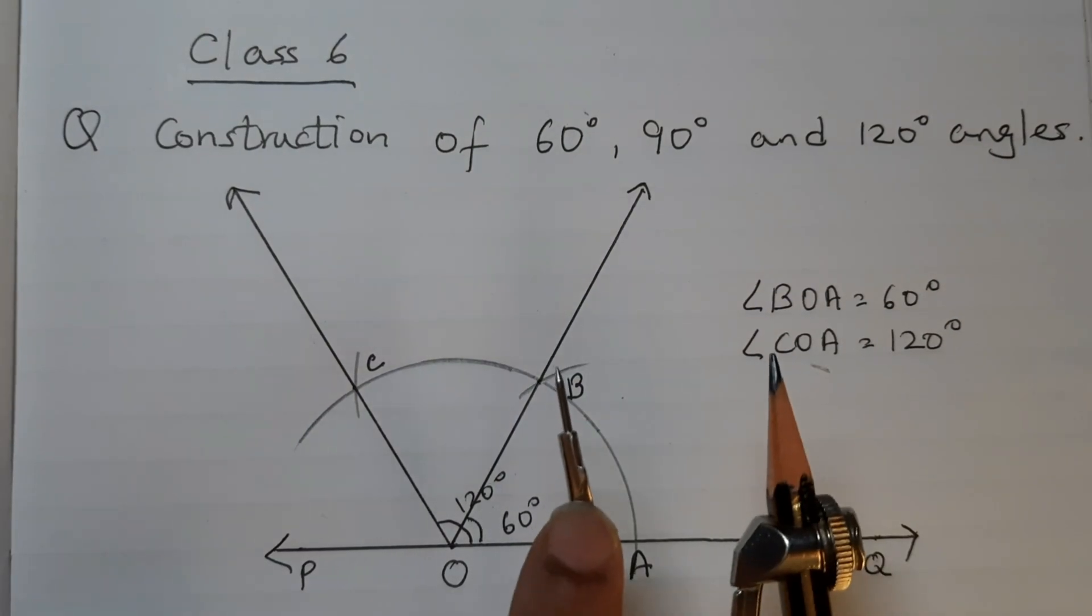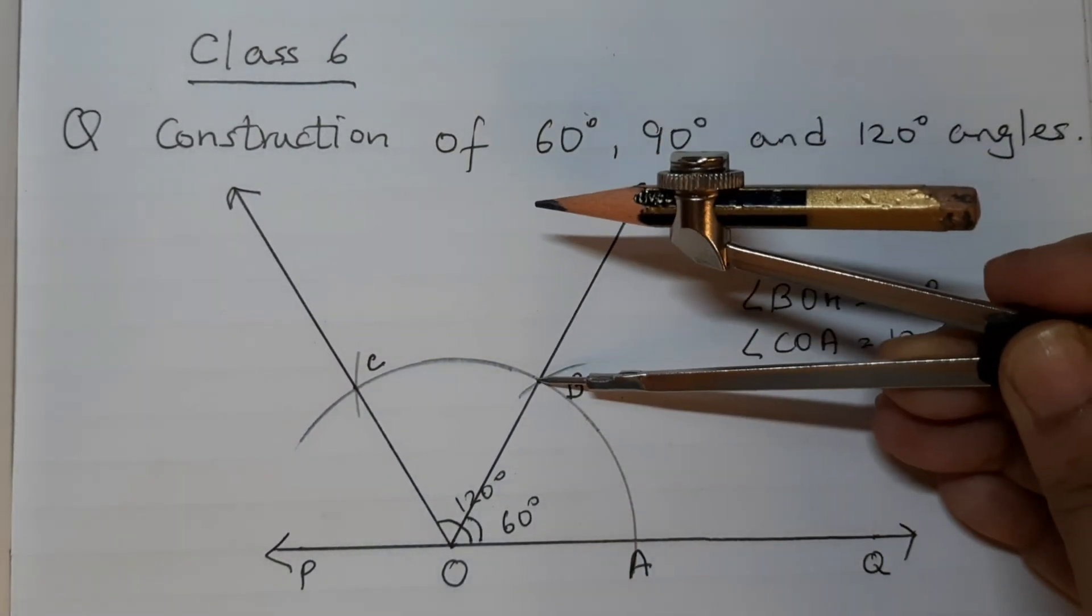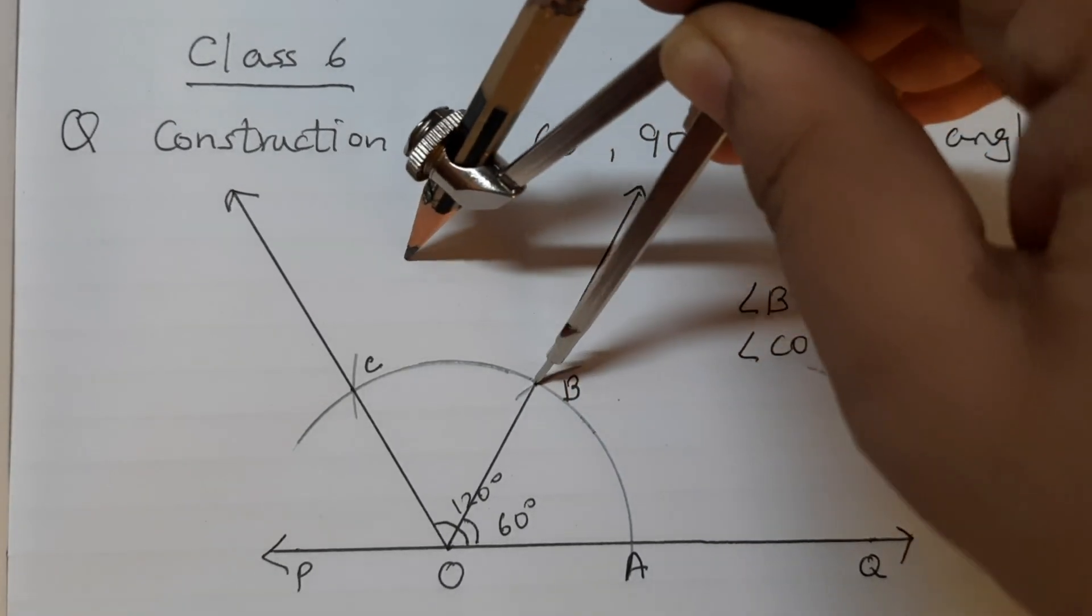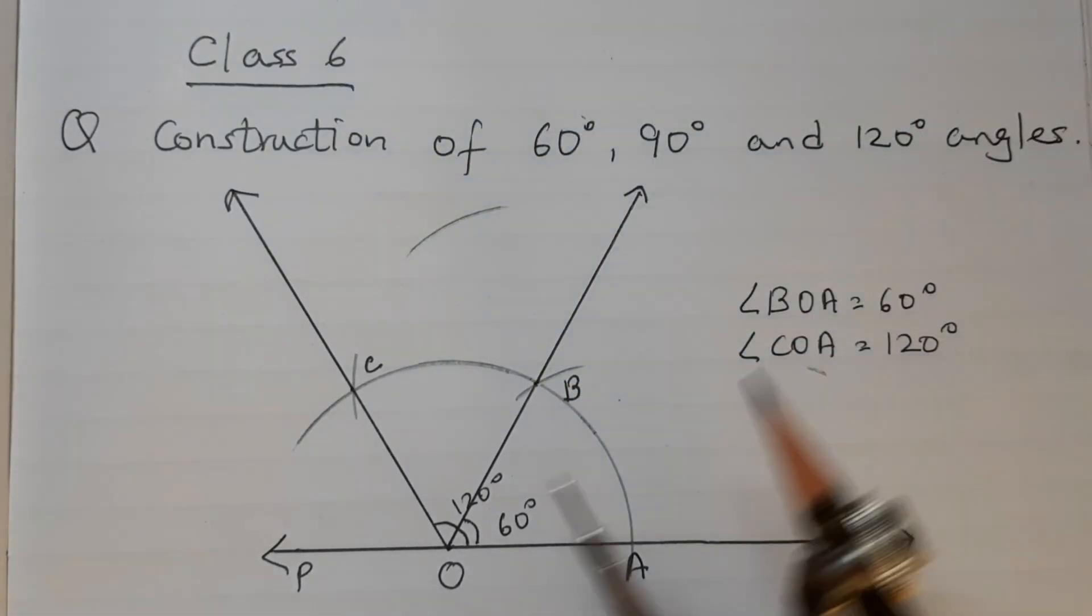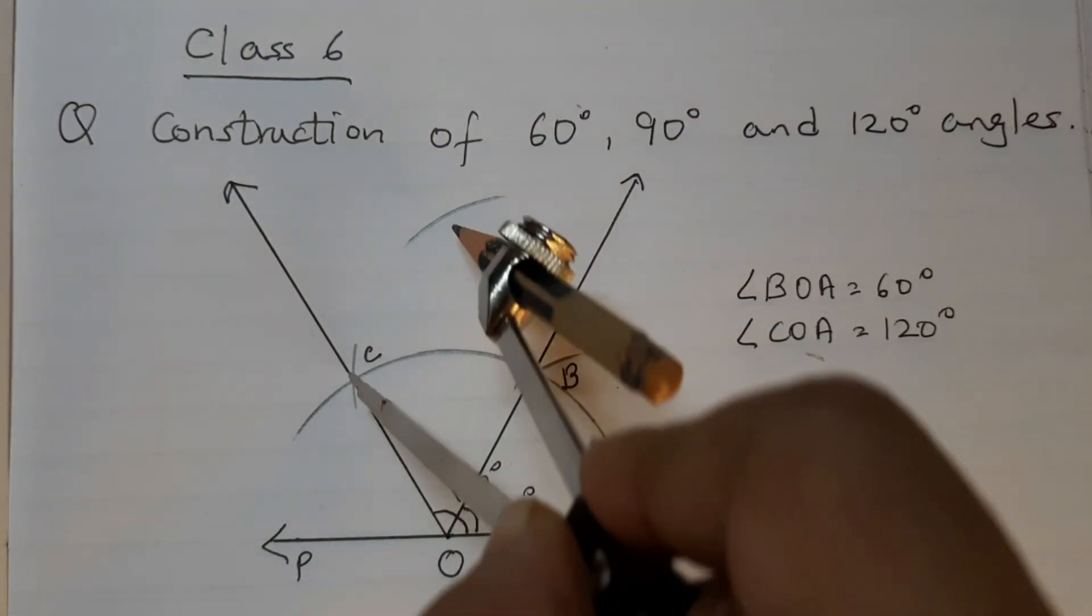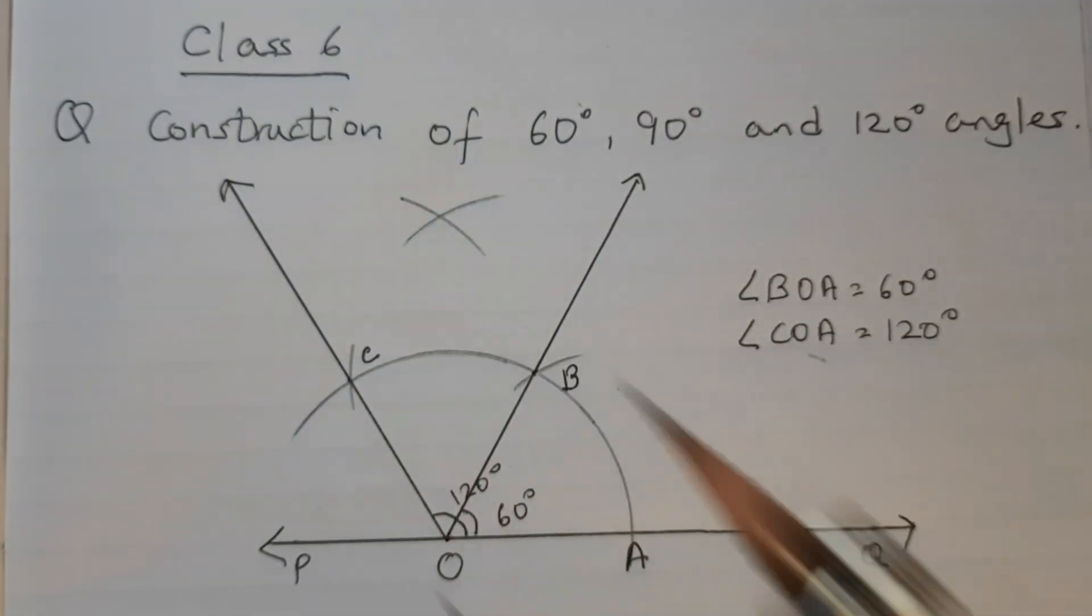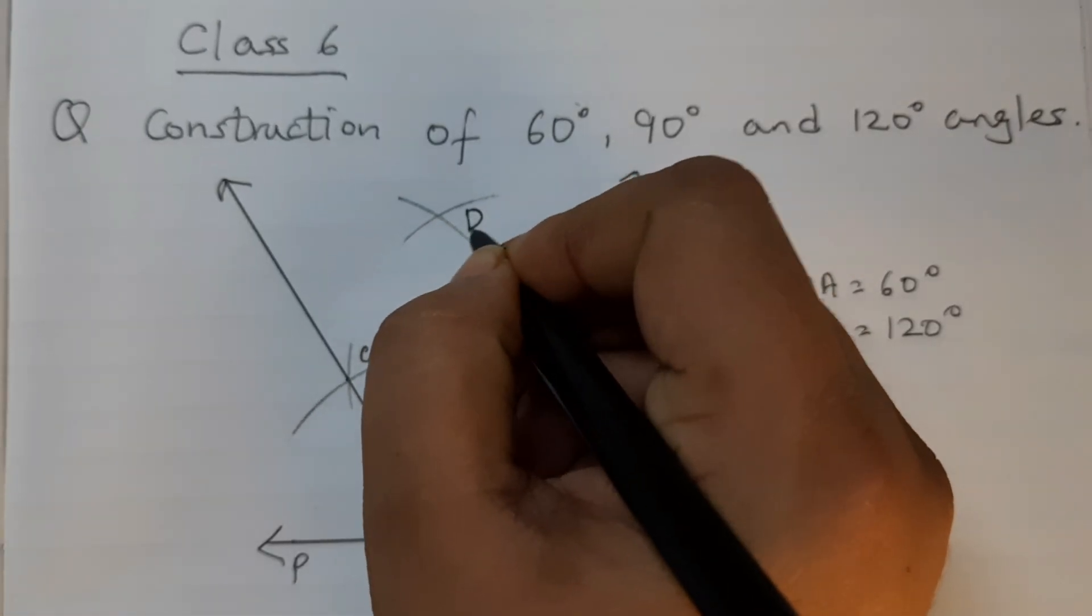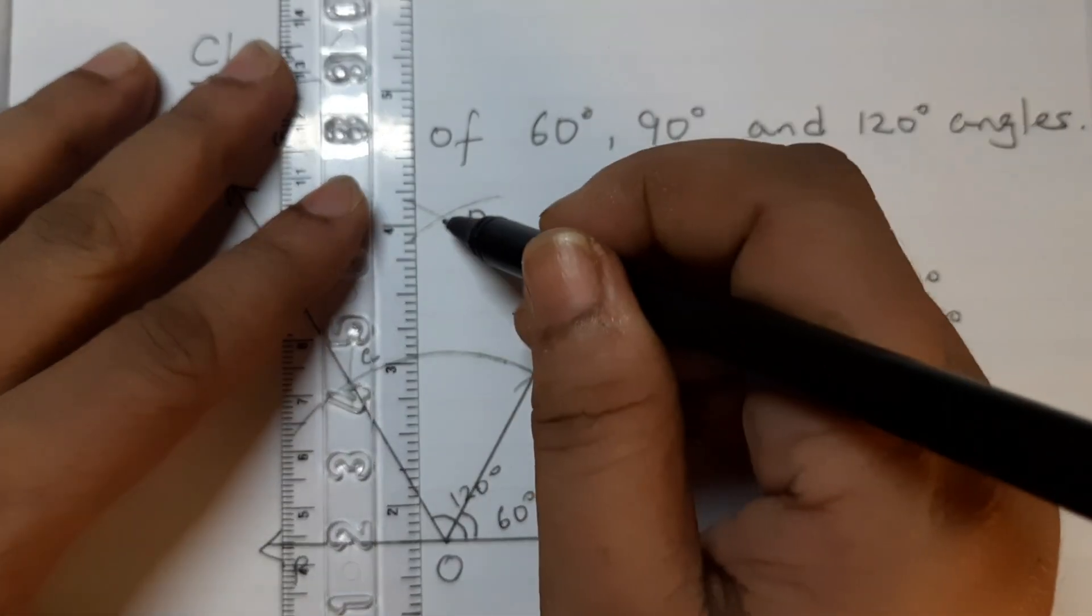With the same radius that we took in the beginning, place the pointer at B and draw an arc and place the pointer at C and draw an arc. Now, let's say this point is D. Join O, D.